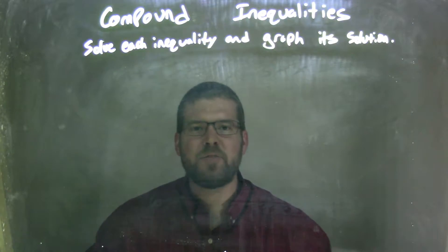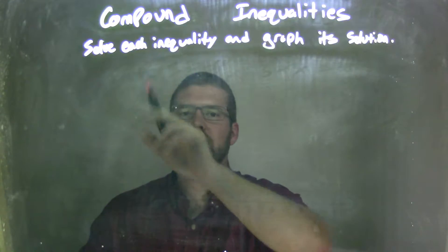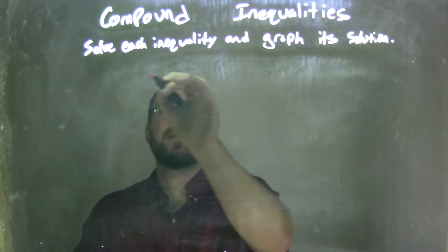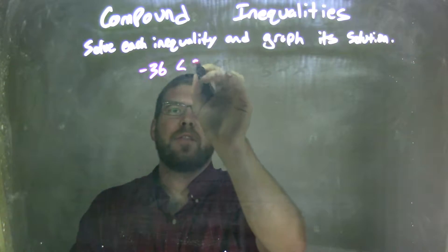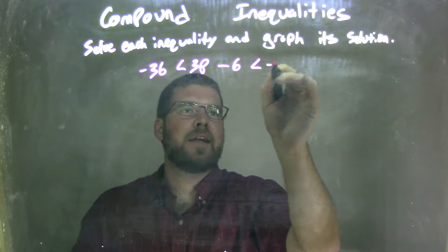Hi, I'm Sean Gannett, and this is MinuteMap, and today we're going to learn about compound inequalities. We're going to solve each inequality and graph its solution. So if I was given this inequality, negative 36 is less than 3p minus 6, which is less than negative 15.